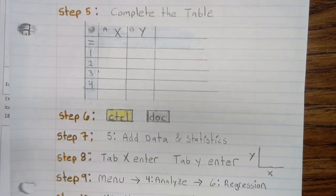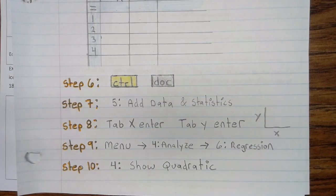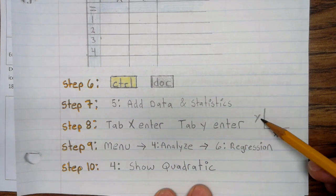Step 6: Press Control-Doc. Step 7: Press 5, Add data and statistics. Step 8: Tab X, Enter. Tab Y, Enter. Make sure X is on the bottom, Y is on the left.